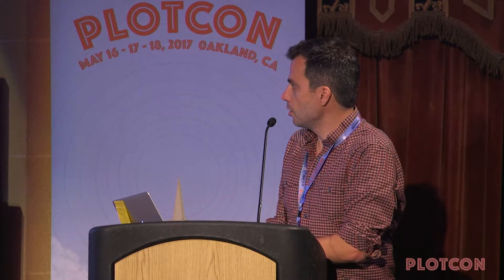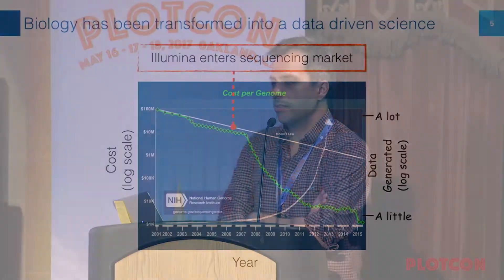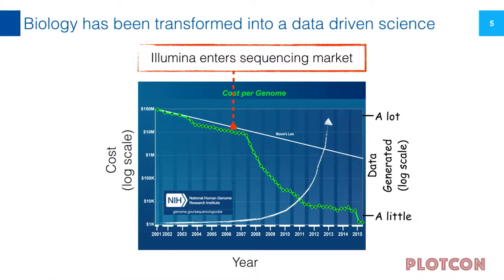Given this vast reduction in cost, you can imagine that the amount of data we're generating now is astronomical. If I were to plot the real acceleration of data generation, it would be so fast we'd open a wormhole and rip through the space-time continuum. There's a lot of data being generated and we need to understand how to use it — what is it telling us?